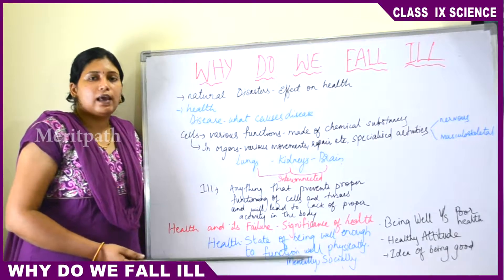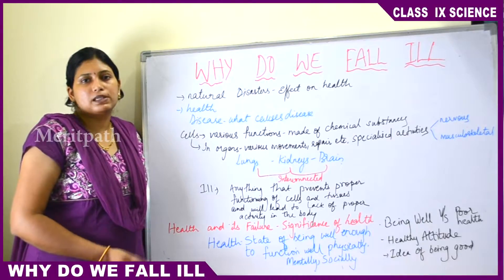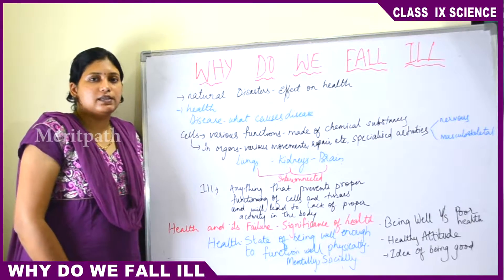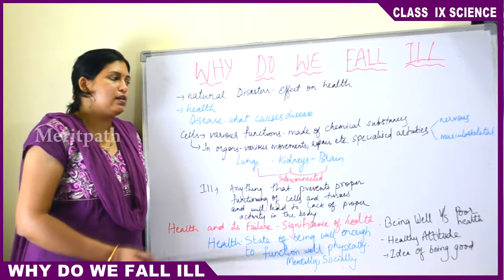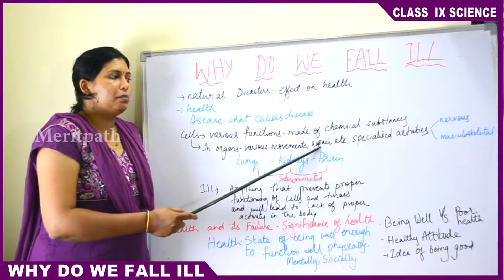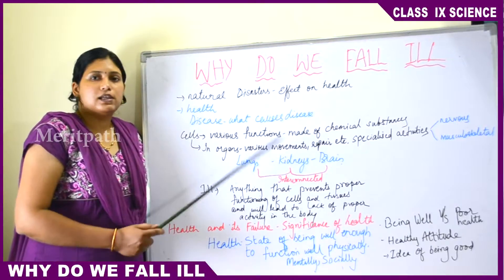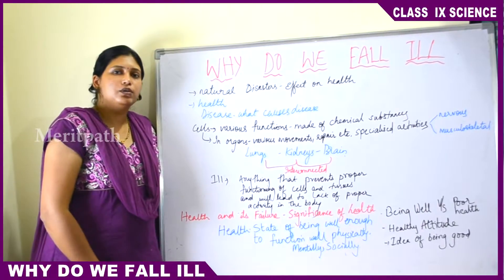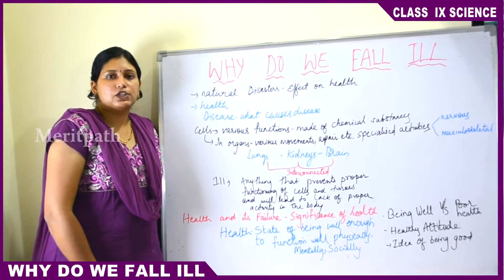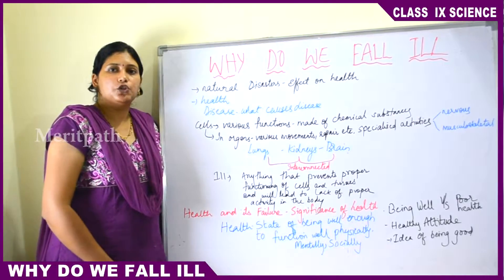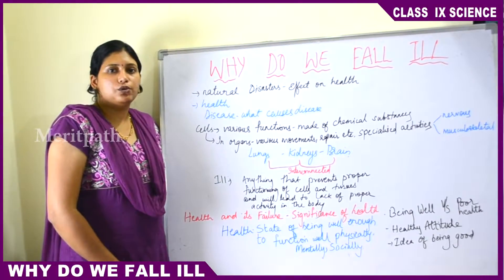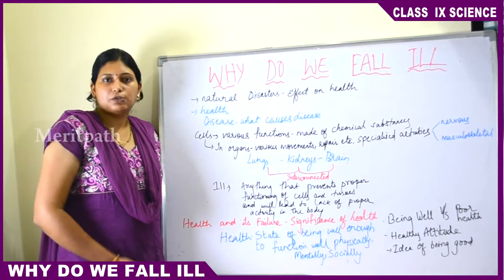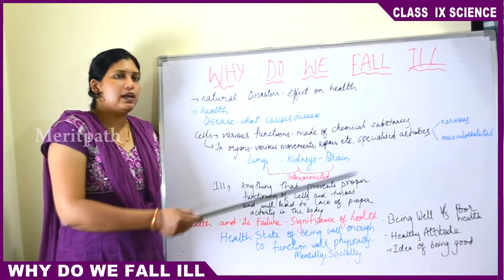In various organs, cells perform different activities. For example, in blood, red blood cells (RBCs) keep moving continuously. Cells also undergo repair — dead cells are replaced by new cells, and if there is any organ damage, cells repair it. Cells also undertake specialized activities; for example, in nervous tissue, cells send signals to the brain and transfer messages to other body parts. In musculoskeletal tissue, muscles and bones help in movement and provide mechanical support.